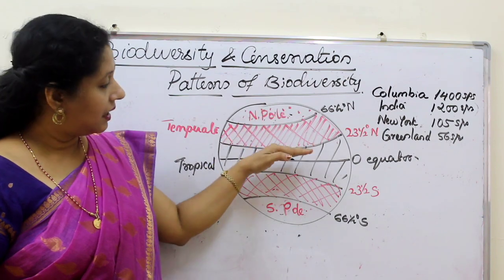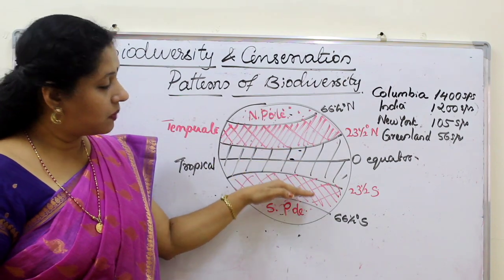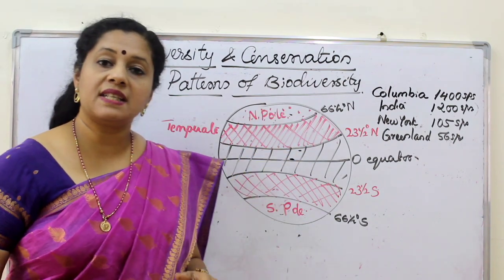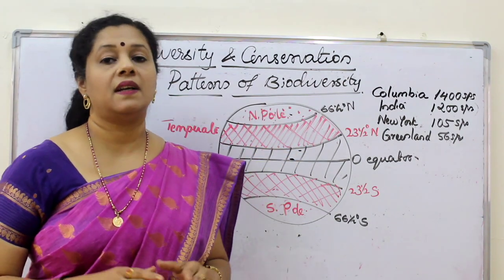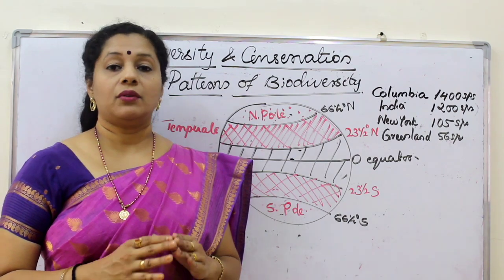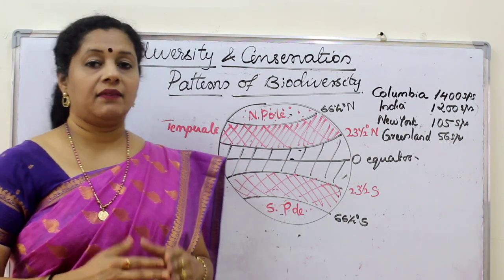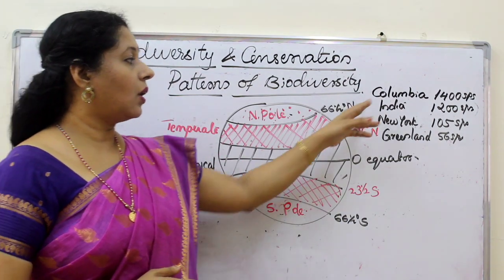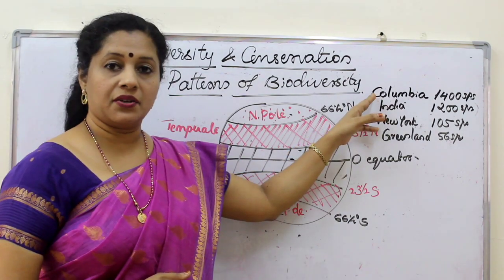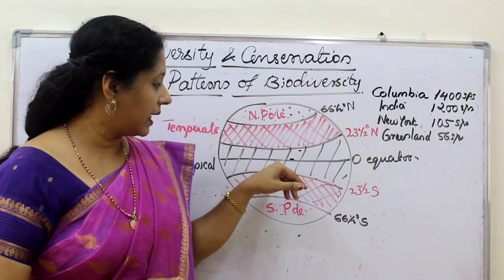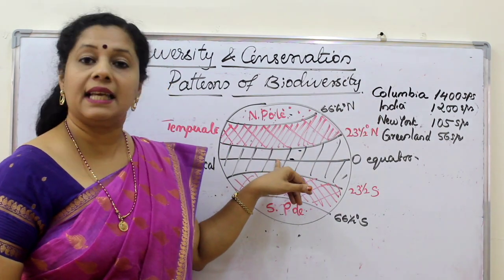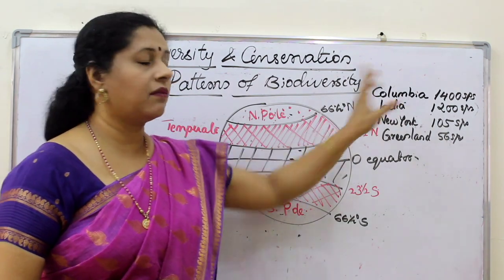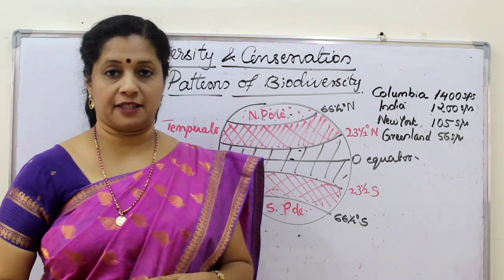The same way, if you come downwards to the south also, the species diversity is decreasing. To see that, we have an example in the textbook. Colombia is a country which is located near the equator. In Colombia, there are 1400 species of birds.